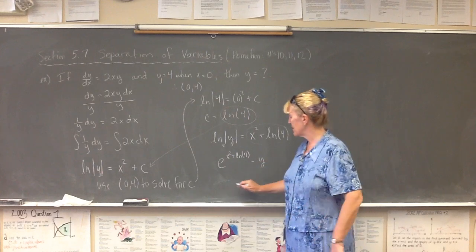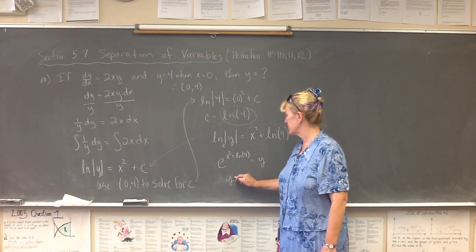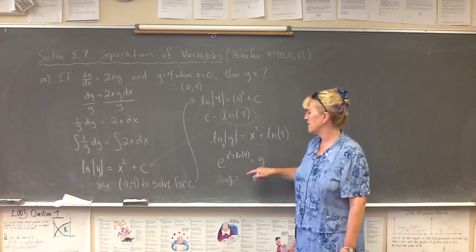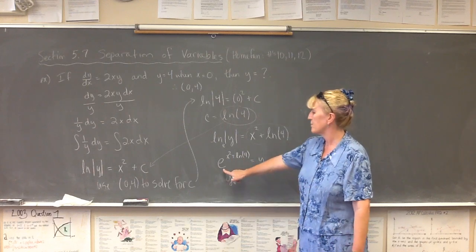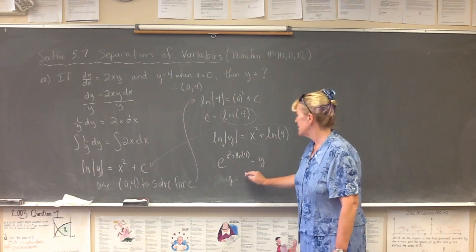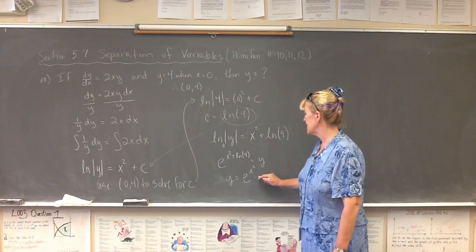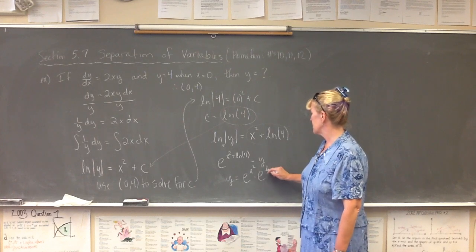I'm going to turn this around, and as I turn it around, I'm going to separate it as well. So I see addition going on in my exponent, which means my powers had to have been multiplied with the same base, that base of which would have been an e. So I'm going to separate this and call this e to the x squared times e to the natural log of 4.